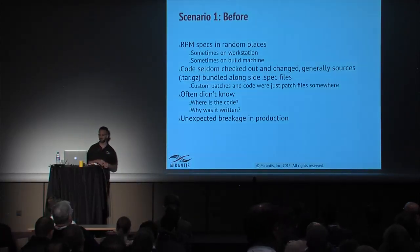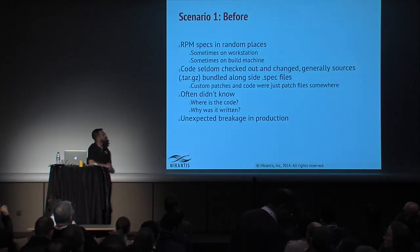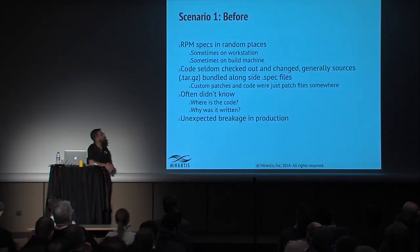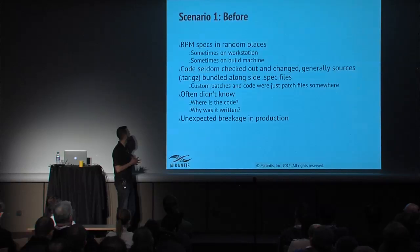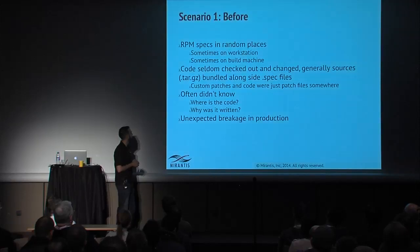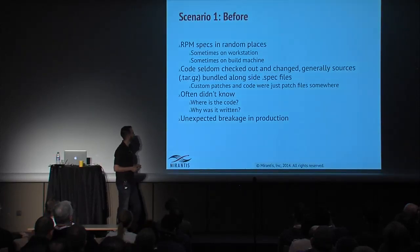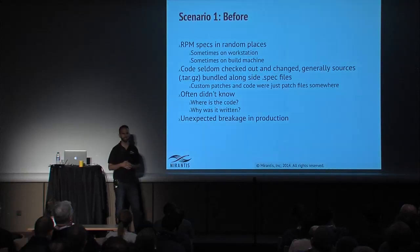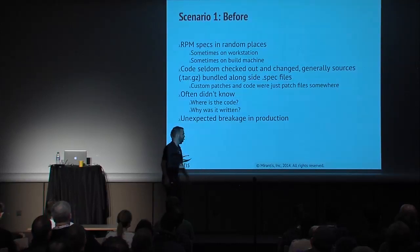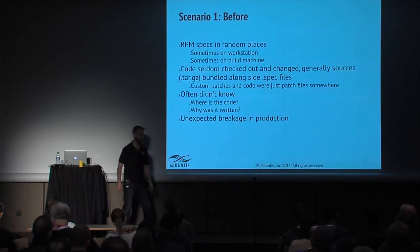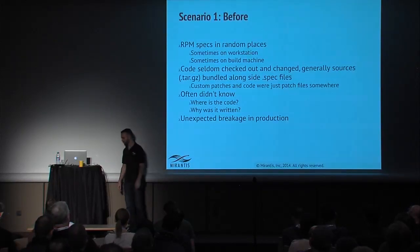How this would work is someone would build the RPMs — maybe on their workstation, maybe on a build machine. The specs ended up in random places. We knew, for example, that I had built the PowerDNS RPM, so we could always talk to Mike about where the spec was. The problem was we could lose code, lose patches. There wouldn't be good comments with that code if we could find it. I couldn't remember why I had patched something a certain way. And we would deploy the RPM in production on a couple boxes, see it worked great, blow it out everywhere, and then things would break.